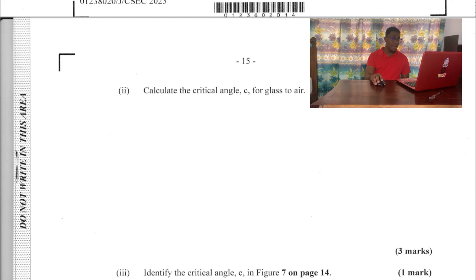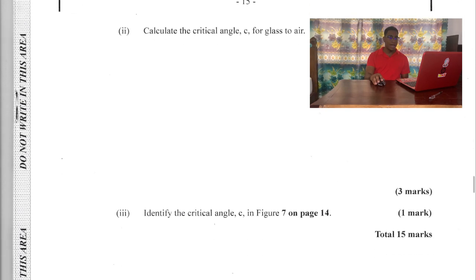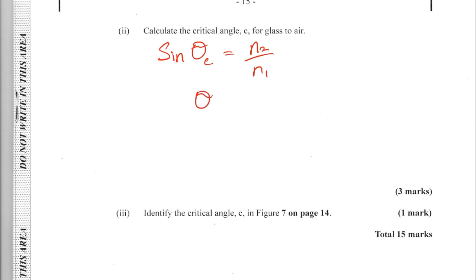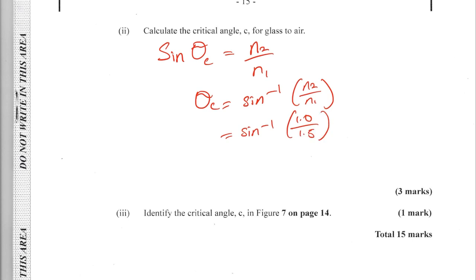Question D2: calculate the critical angle C for glass to air. The critical angle is the angle of incidence at which the refracted ray travels along the boundary of the two media. For glass with refractive index 1.5 and air with refractive index approximately 1, working out the formula gives a critical angle of 42 degrees. The critical angle is labeled Z in figure 7 on page 14.